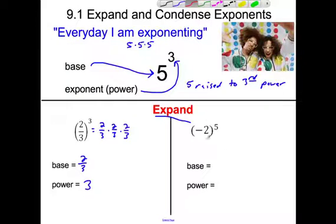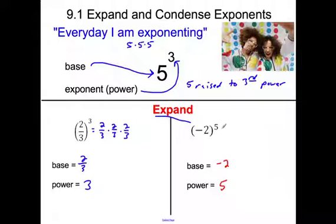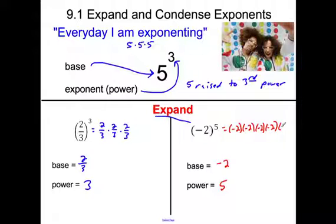We're going to do a lot of expanding. Can you look at the base of this one? The base is negative two — it's in the parentheses. What's the power? It's the fifth power. If I want to expand this out, it's just going to be negative two times negative two times negative two times negative two times negative two. So we're going to do a lot of repeating, a lot of expanding.